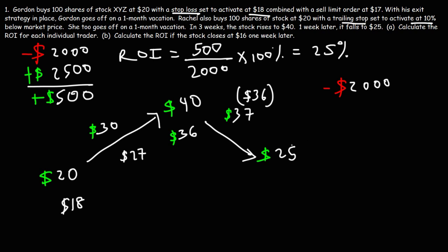So when the price of the stock falls at $25, at this point Rachel's shares would have been sold at $36 by the trailing stop feature. As the stock reaches $36, the trailing stop will be activated and the system will try to sell her shares at the best price. It could be $36, $35.90, $35.50 - somewhere close to $36.